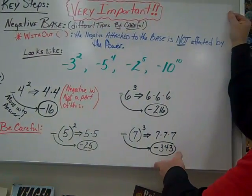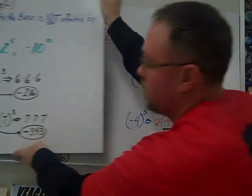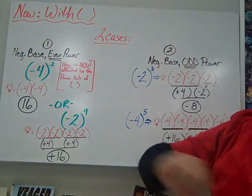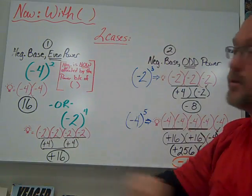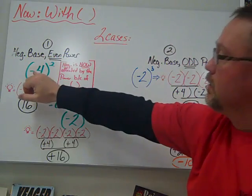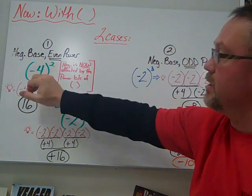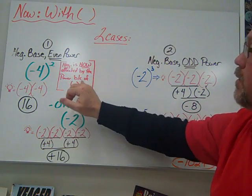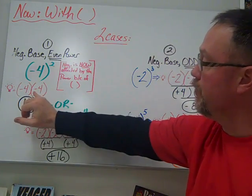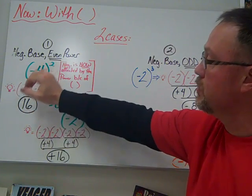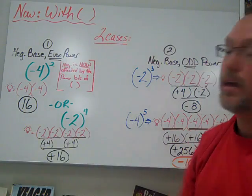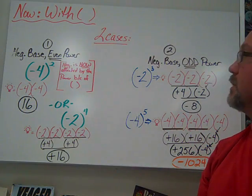The other situation that we're going to have to be careful of is now with parentheses. There's two different cases. In our first case, negative base even power. So we have now the negative inside the parentheses. So it now is affected by the power because of the parentheses. So you would think negative four times negative four because you have two of those. Negative times a negative gives us a positive. And it gives us a positive 16, four times four.